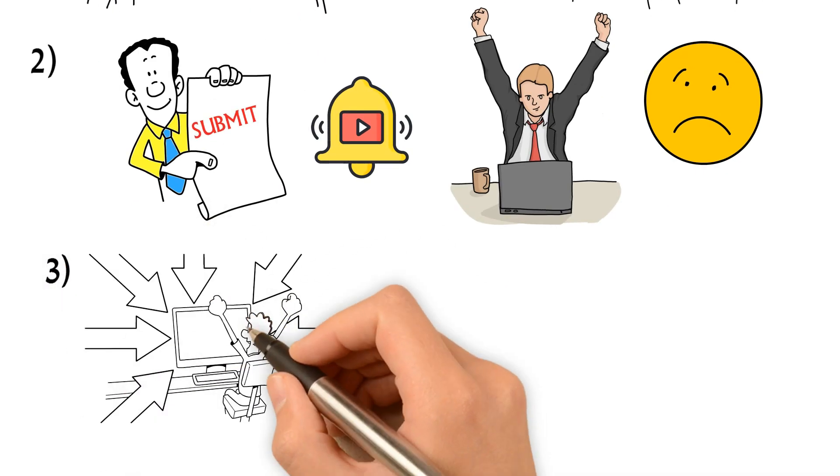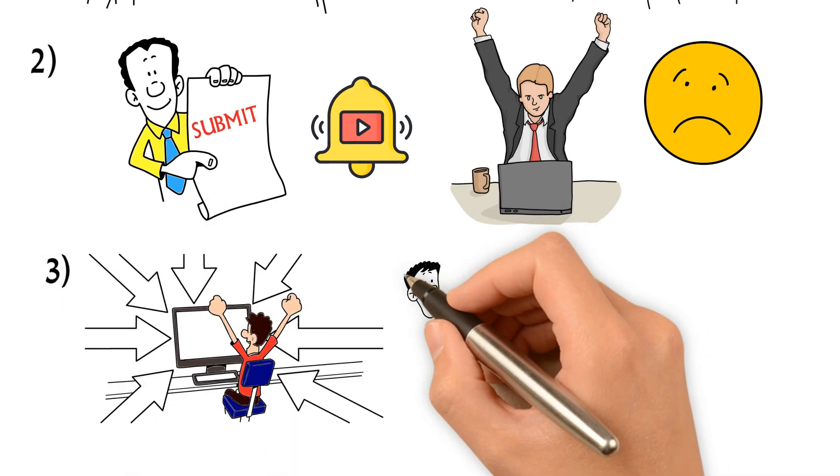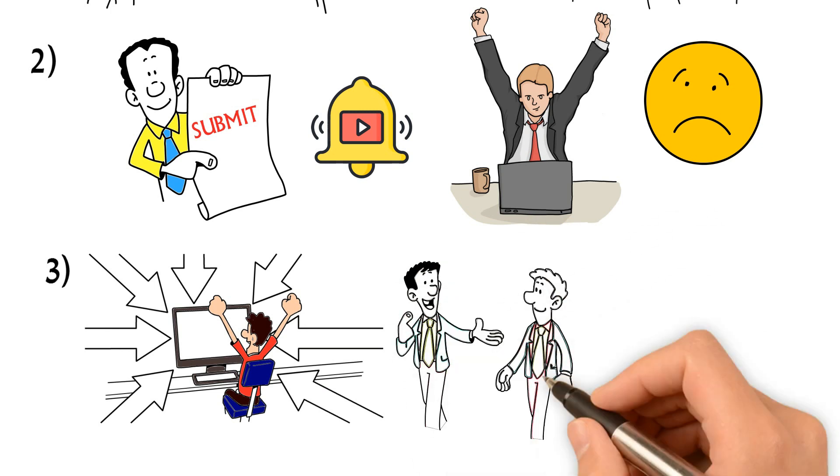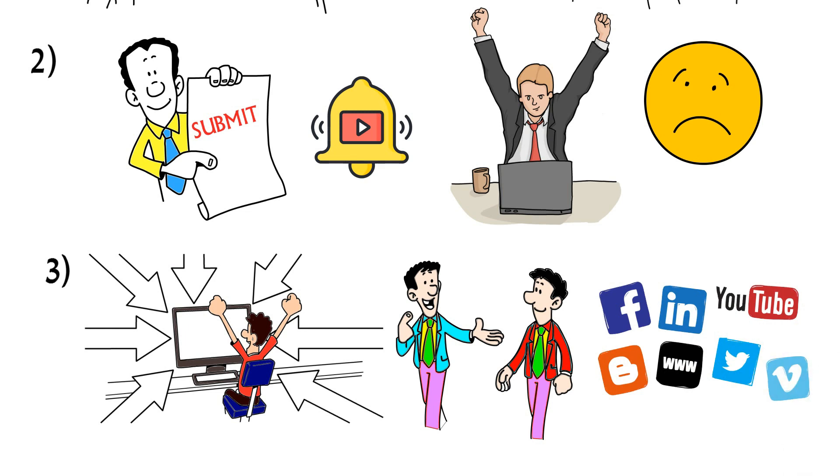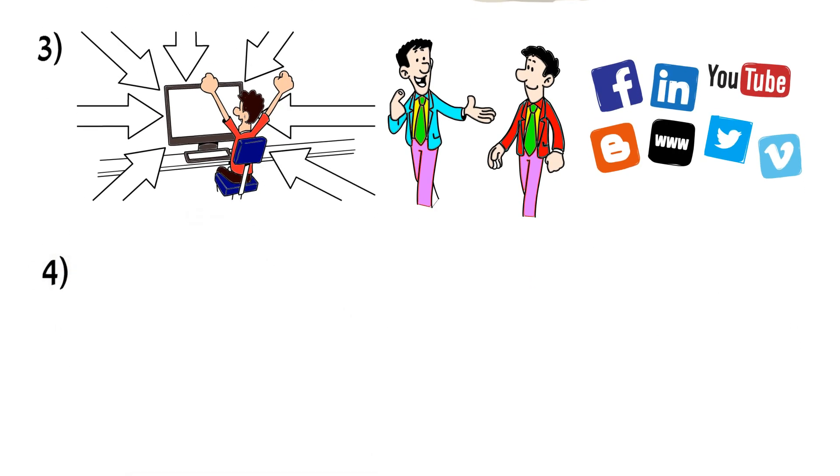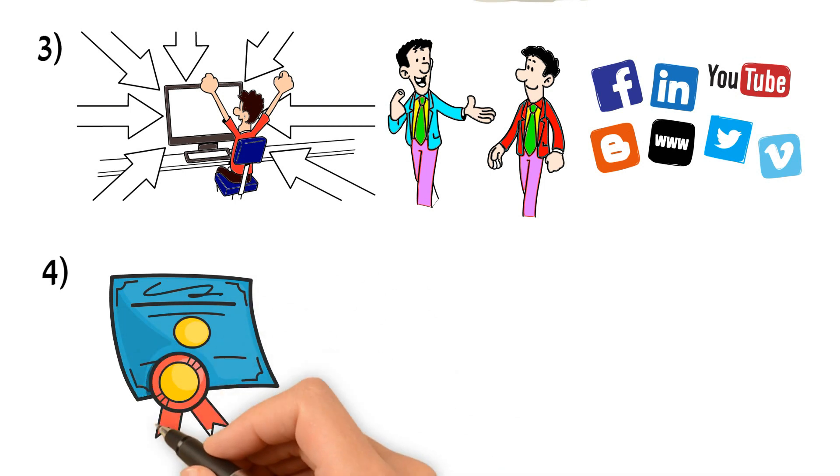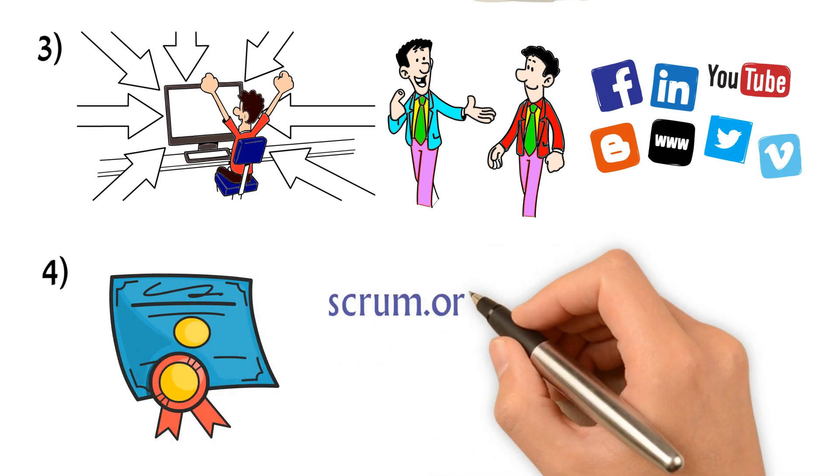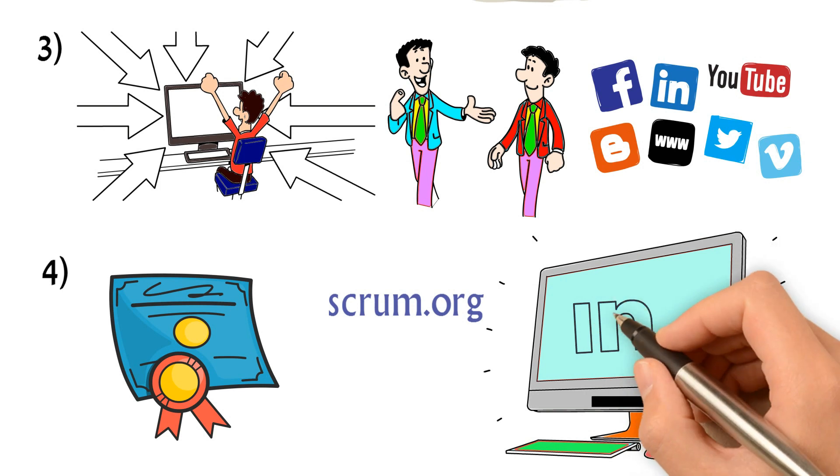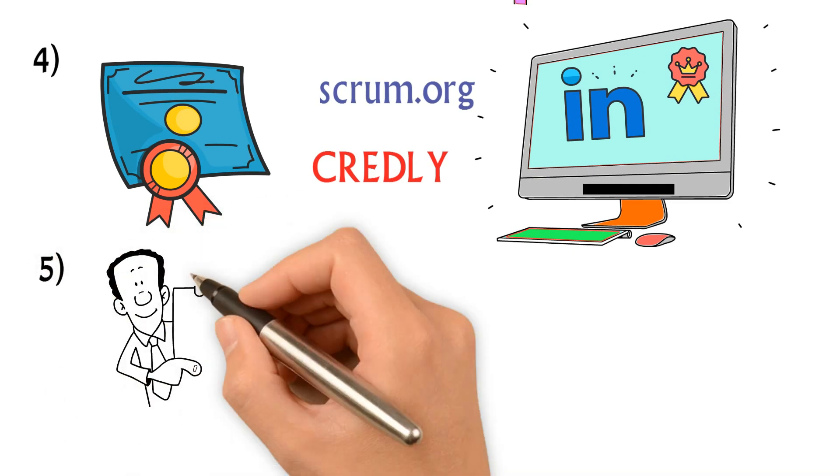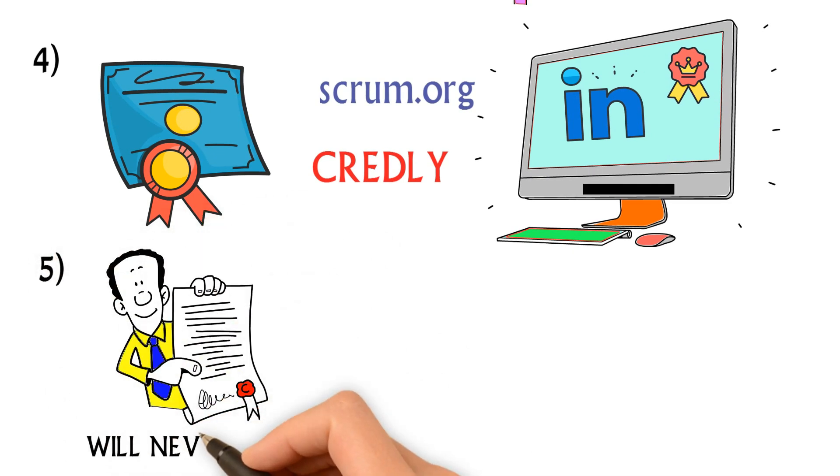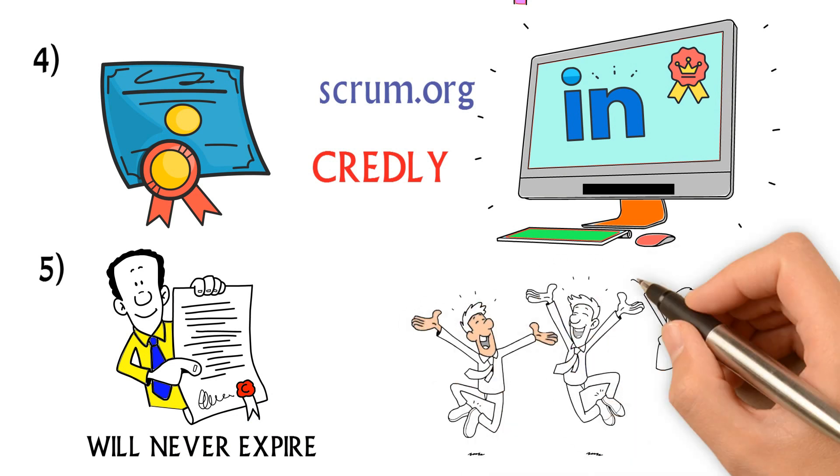If you pass the exam, which I think you will, you can start to share your accomplishments with your friends and colleagues through social medias like LinkedIn. You should be able to download your certificate from Scrum.org in your account. Also, you may update your LinkedIn profile with a digital badge issued by Credly. Remember, the PSM1 certification will never expire. Congratulations on your excellent accomplishment.